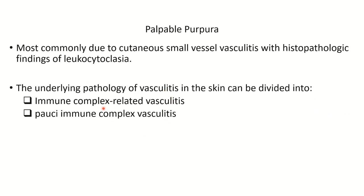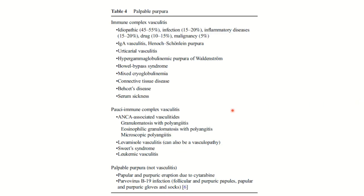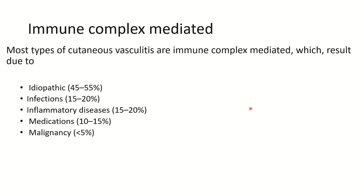The two main types are immune complex vasculitis and pauci-immune complex vasculitis. Most cases of immune complex-mediated vasculitis are idiopathic. Around 20% result from infections and inflammatory disorders. Drug-induced vasculitis accounts for 10 to 15% of cases. Malignancy can also cause immune complex-related vasculitis.